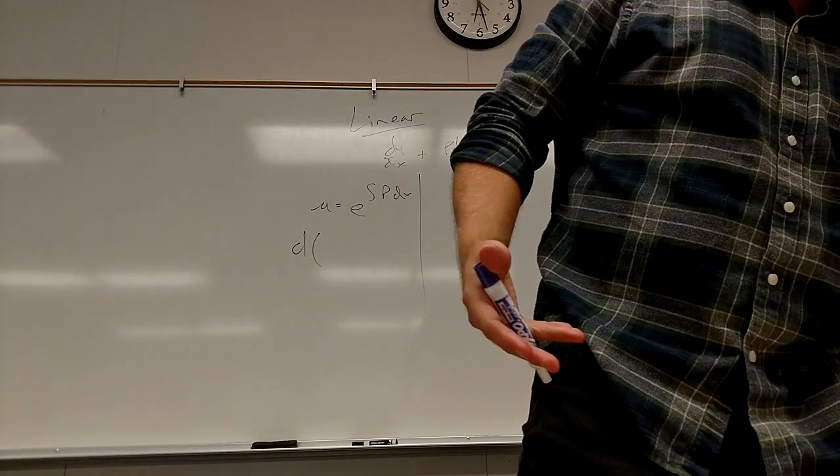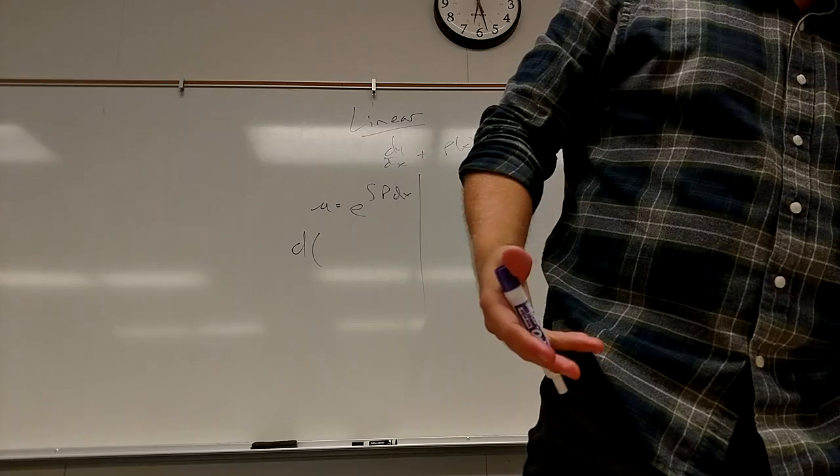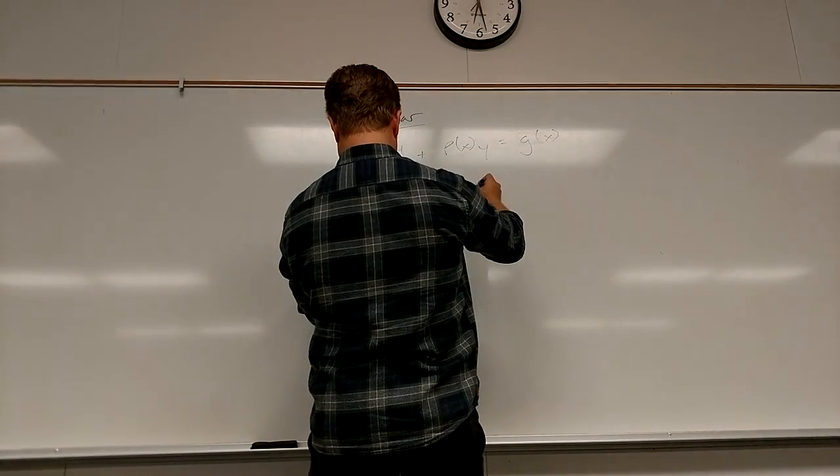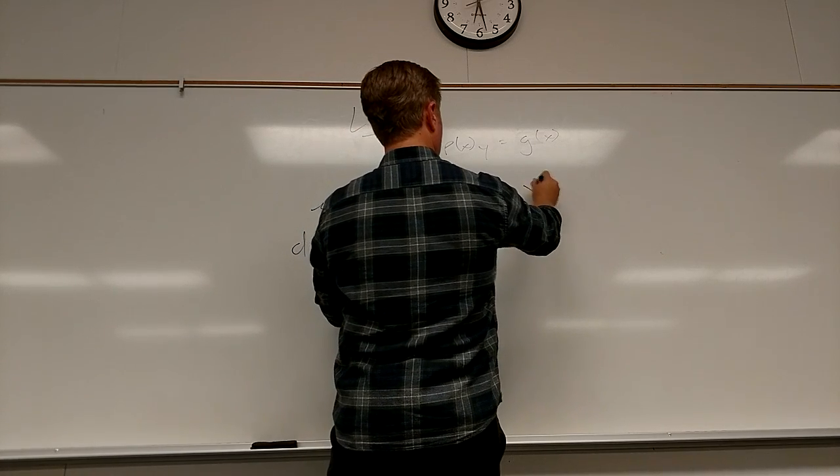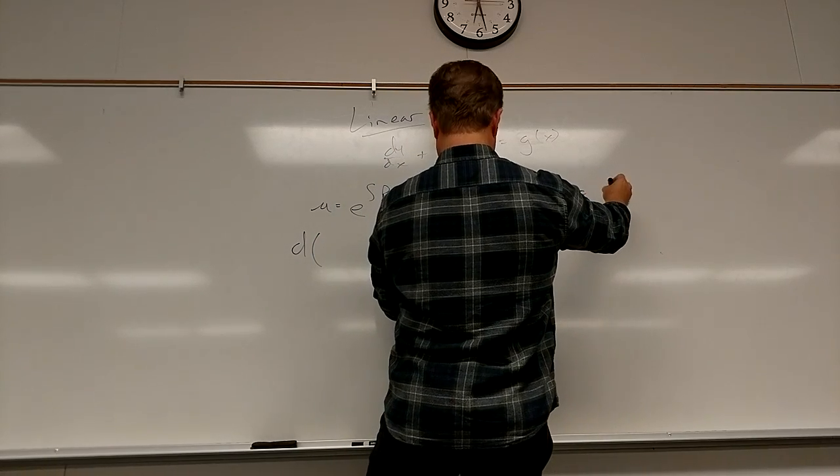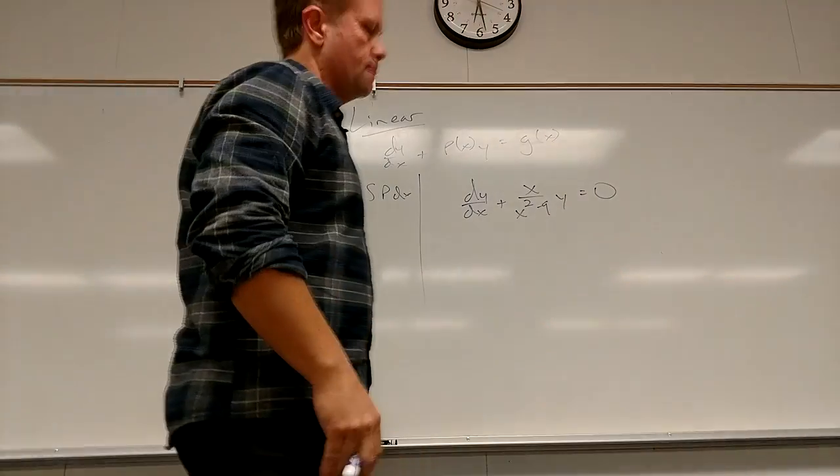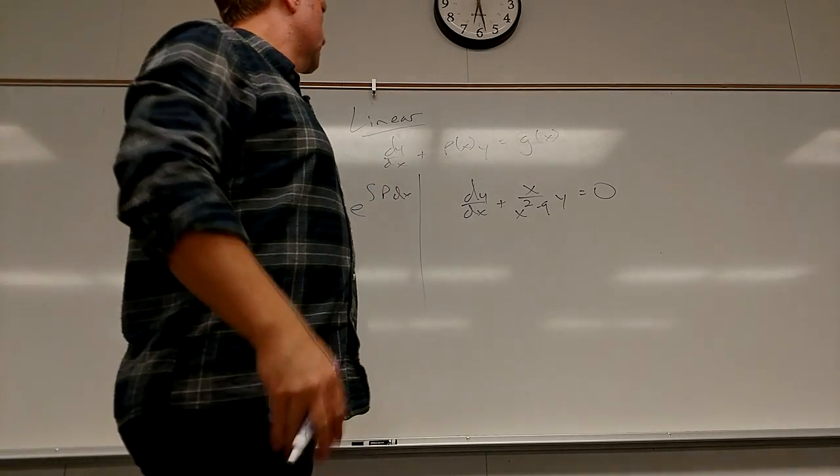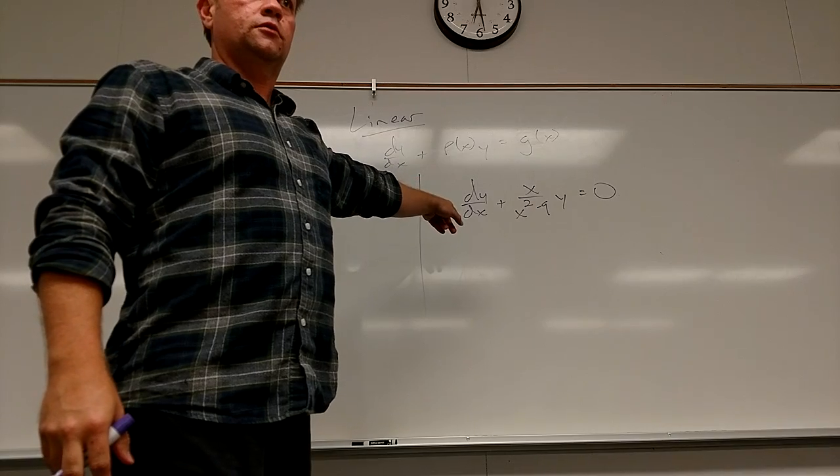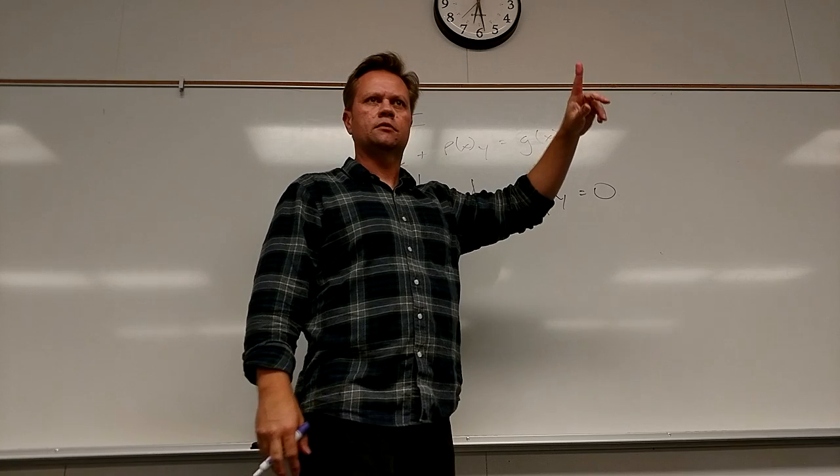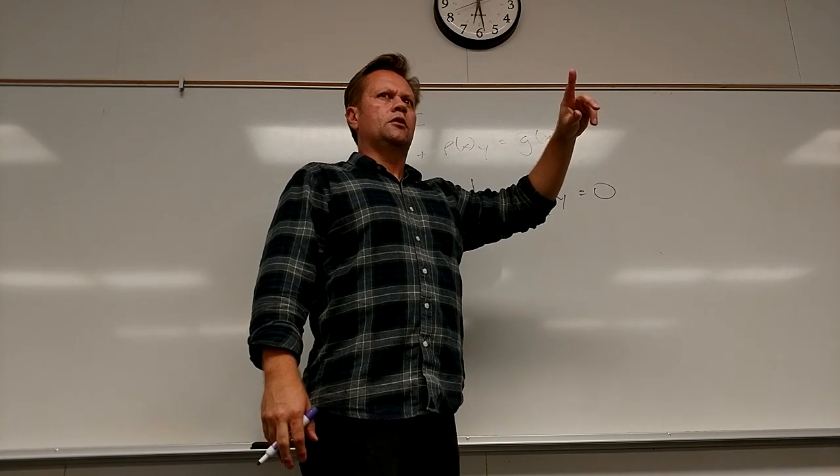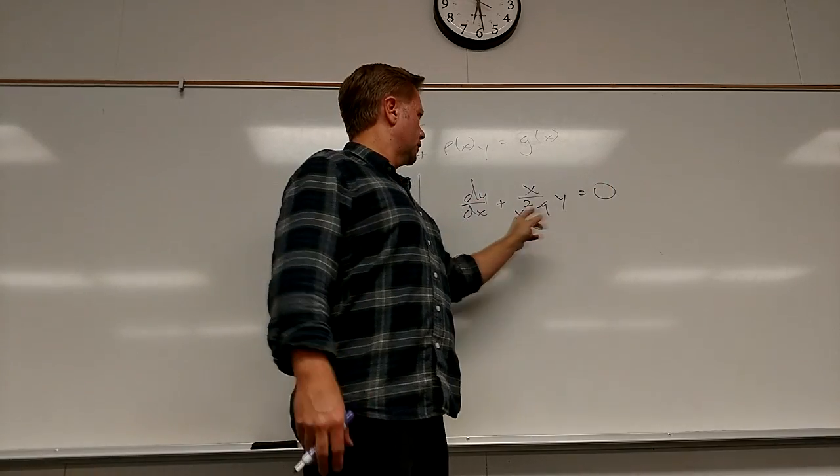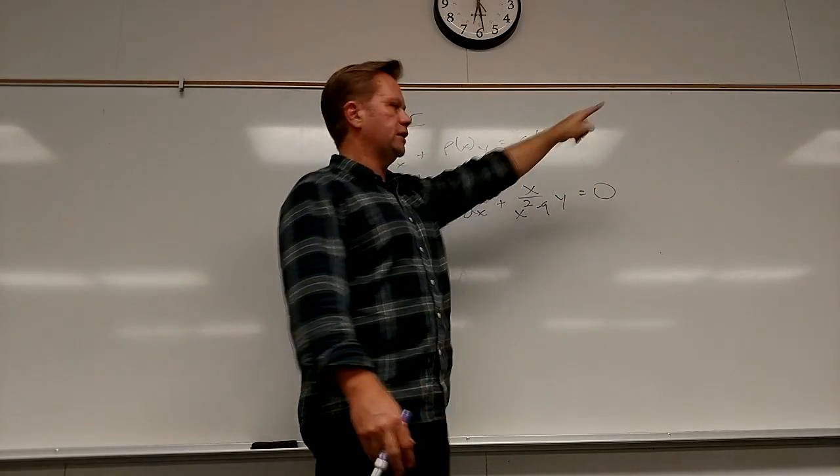So let's do an example. If this is not separable, what is the integrating factor? Let's see, where's an example? Let's do this one. dY/dX plus X over X squared minus 9 times Y equals 0. Is this separable? Can't you subtract that and divide by Y, multiply by dX? So could I separate things? Yeah.